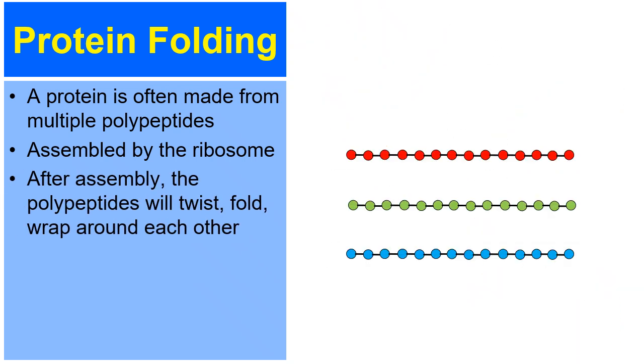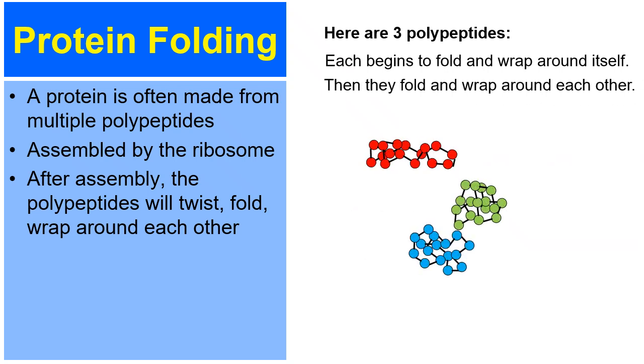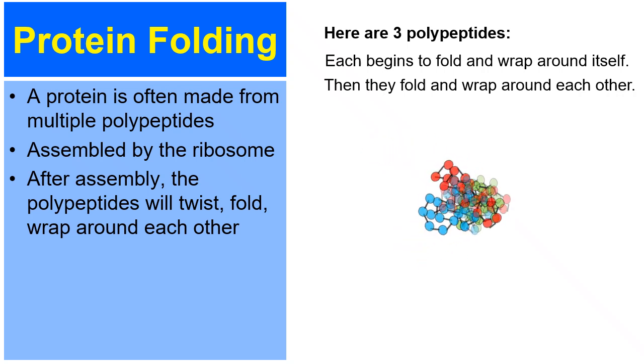And after the polypeptide is assembled, it'll twist and fold and wrap around each other. And so here are three polypeptides, one in red, one in green, one in blue. Each of them will begin to fold and wrap and twist around itself. And then after that, they then begin to wrap and twist and fold around each other until they make a final object called a protein.